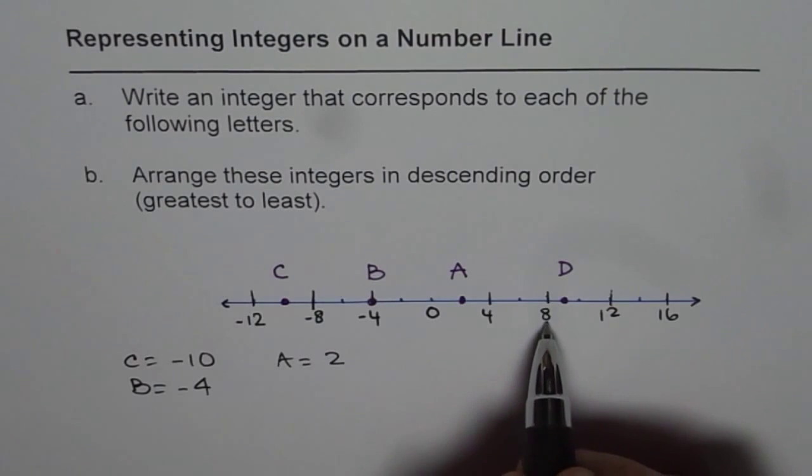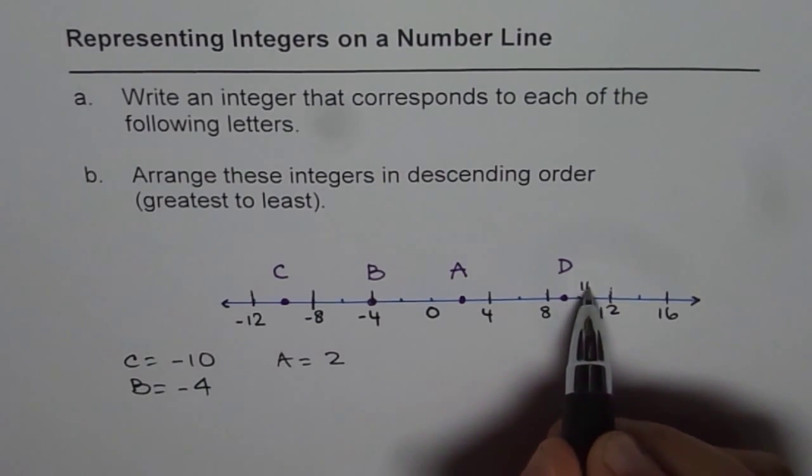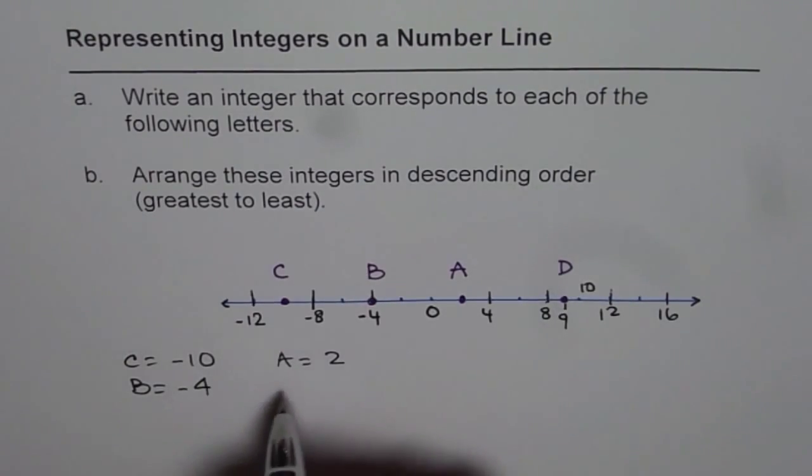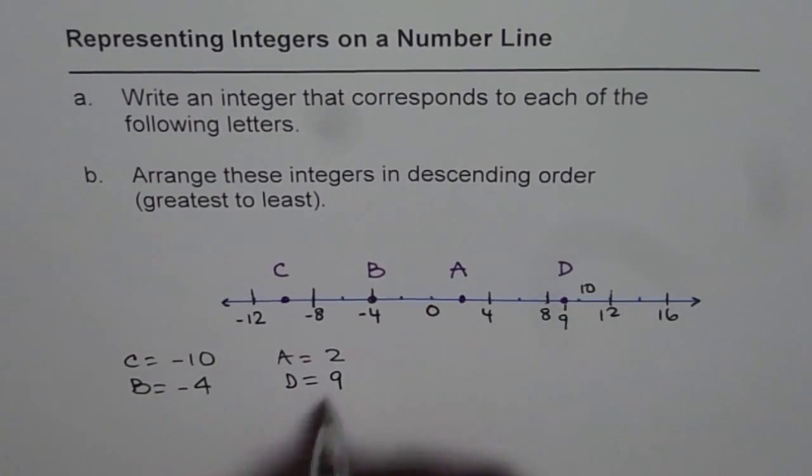Just in between 8 to 12, we have number 10 and between 8 and 10, midway is number 9. So D is 9 for us.